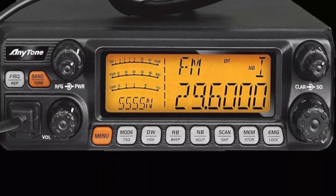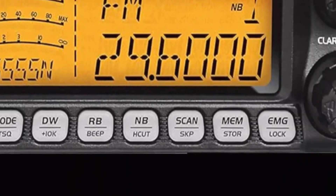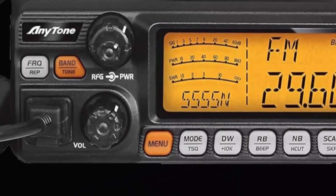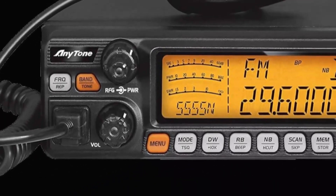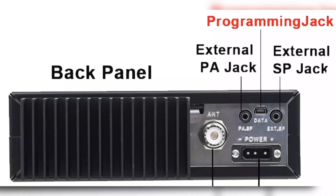The Anytone AT5555N2 delivers a robust power output of 60 watts, ensuring reliable long-distance communication even in challenging terrains. The frequency range is 28 MHz to 29.7 MHz. This radio also includes weather and weather alerts. If you are wondering whether this transceiver can be modded for CB 11 meters, you will need the programming cable and it is done with software. I suggest not doing this if you do not know what you are doing. Please note that the cable does not come included and must be bought separately — I will put the link in the description.